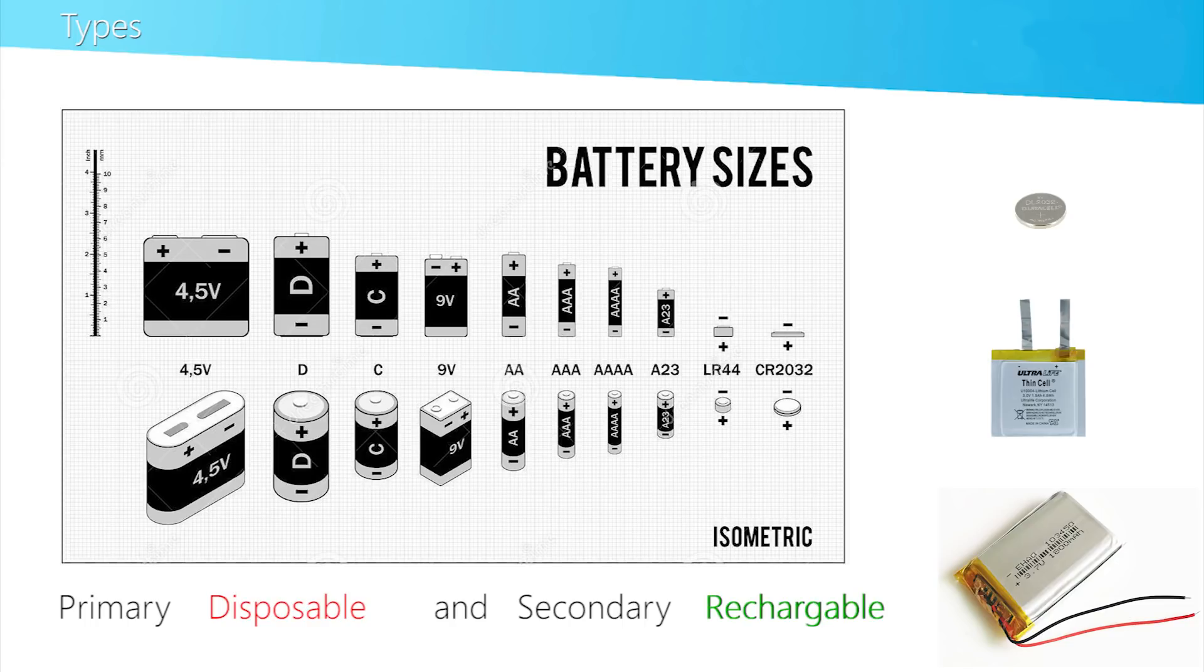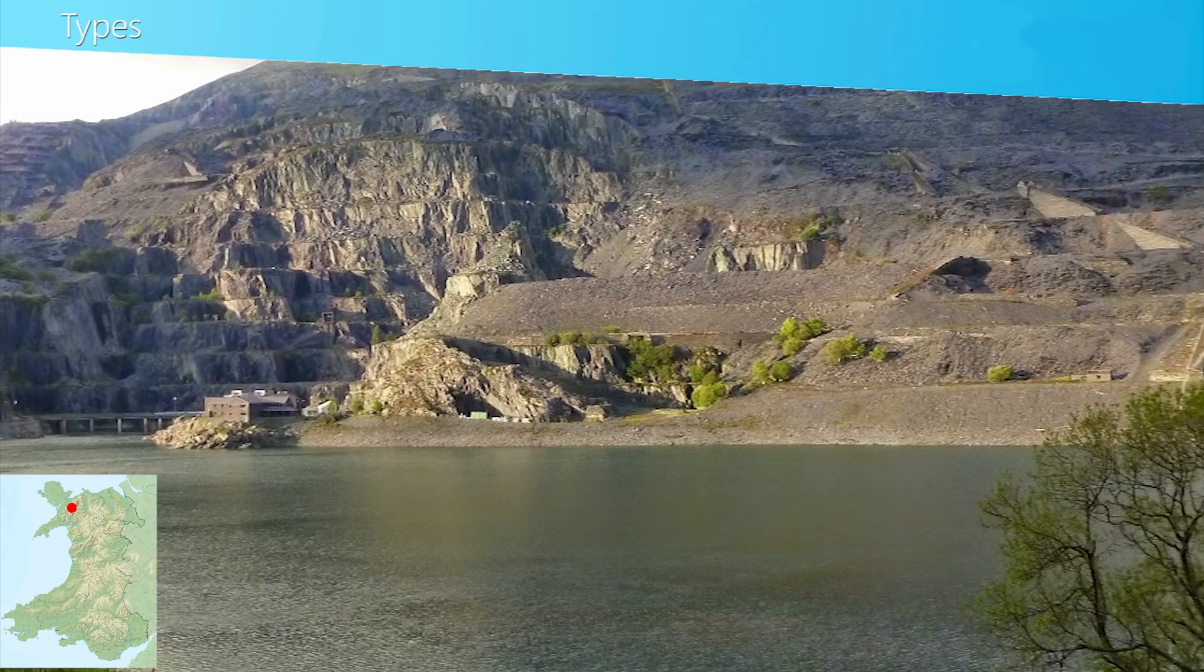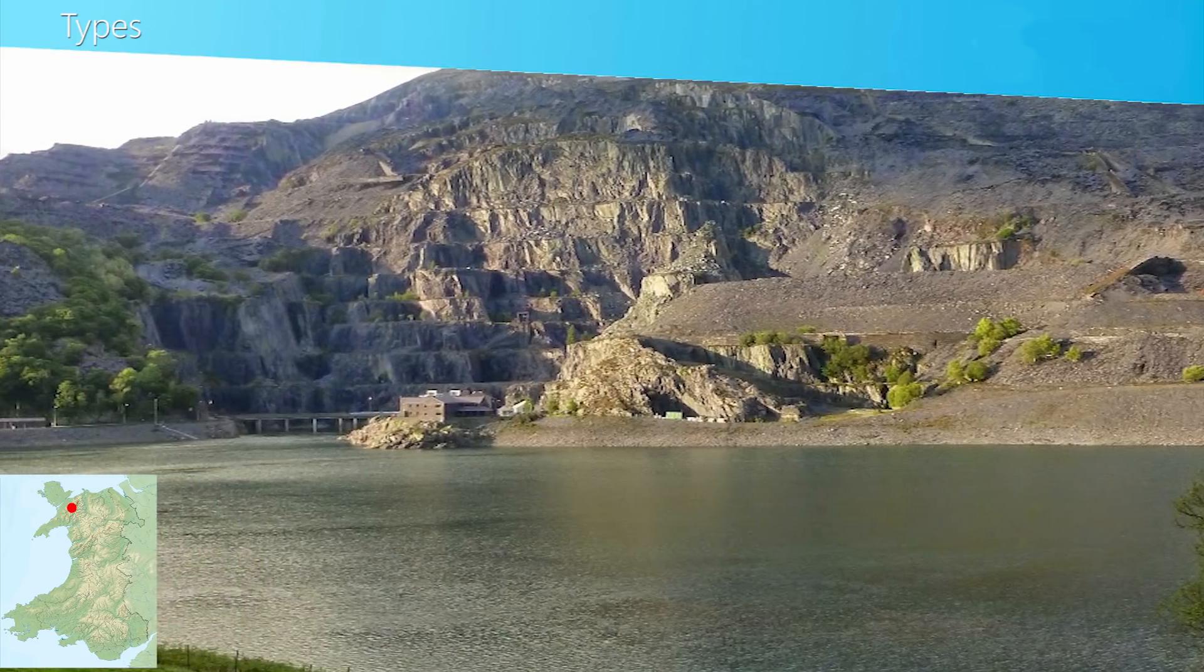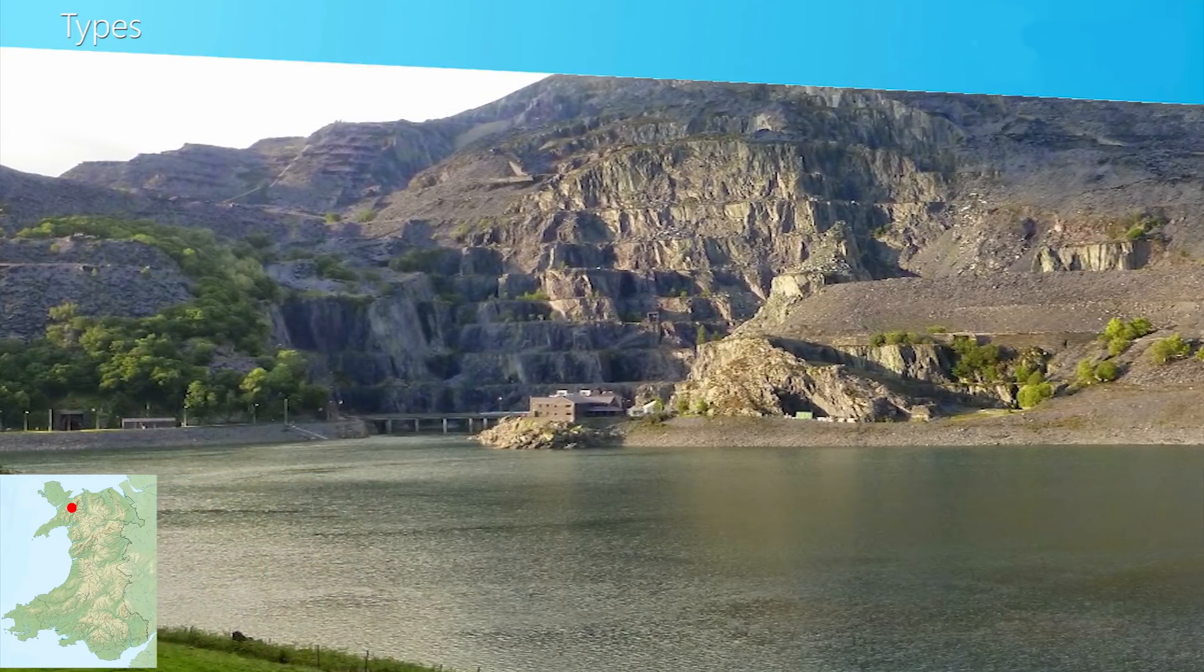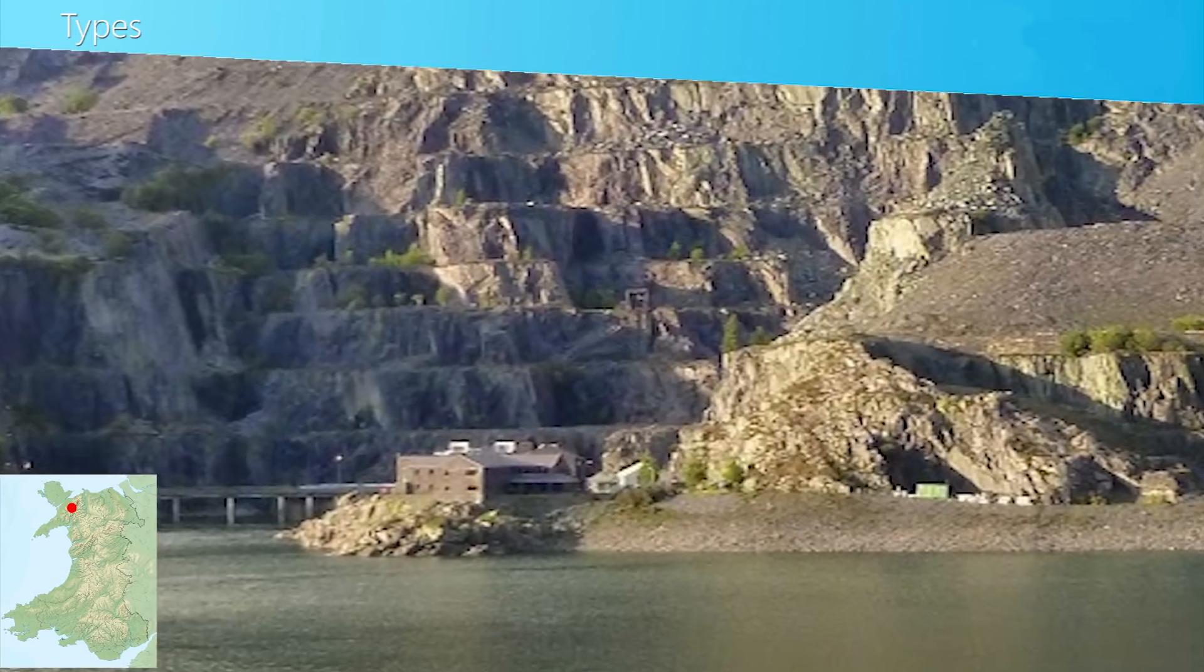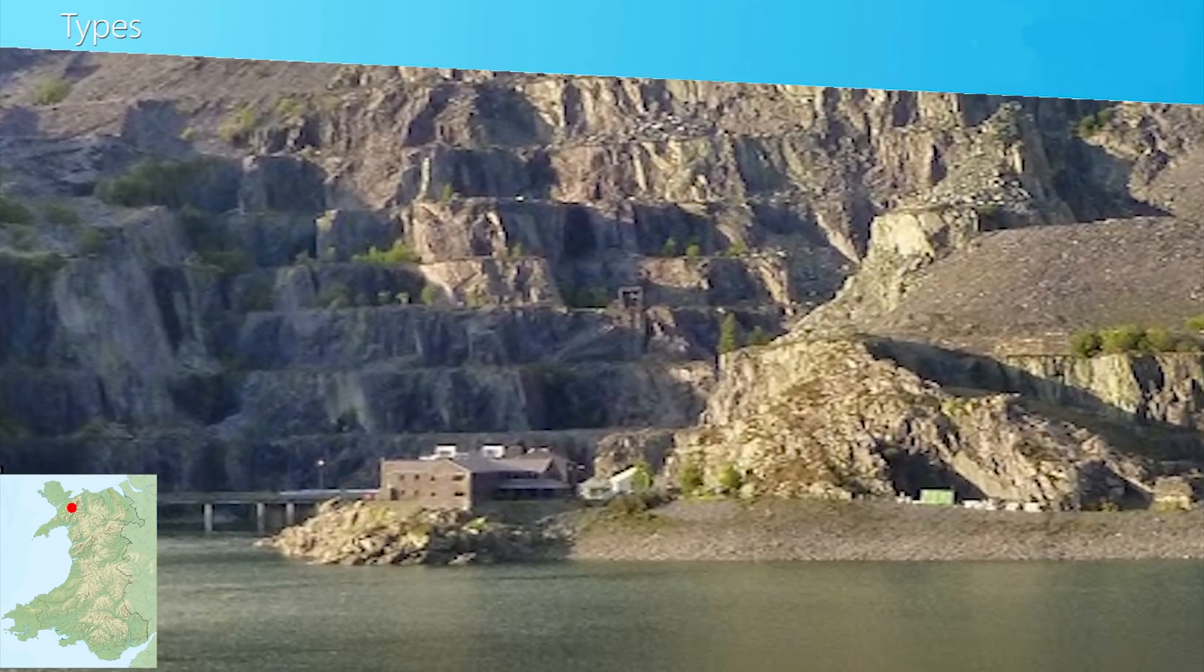As a side point, we have an example of a huge secondary cell here at Dinorwig in North Wales, UK. Water from an upper lake is released into the lower lake as power is required. Generation can be turned on very rapidly, and of course the site is environmentally friendly. The water is then pumped up for reuse during off-peak periods.